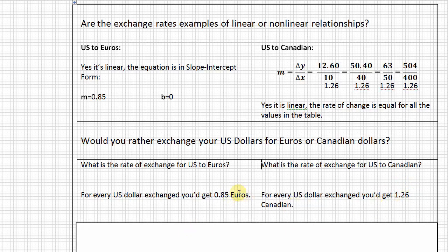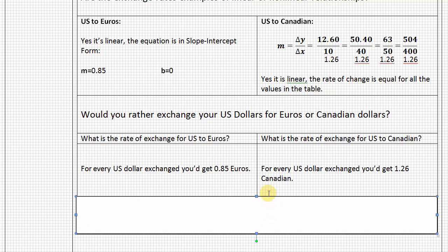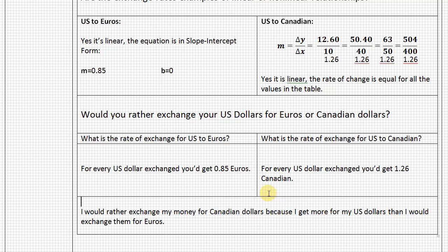Now we're getting more than a dollar Canadian dollar. Here we're getting less than one euro. So what do you think? Which would you rather exchange for? Where is your money going to go the furthest? If it was me personally, and I was making this decision based solely off the exchange rates, I would rather exchange my money for Canadian dollars because I'm getting more for my U.S. dollars than I would if I exchanged them for euros.